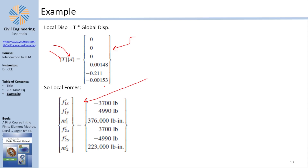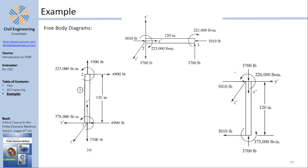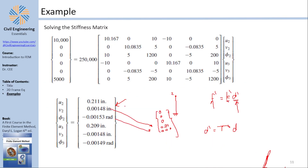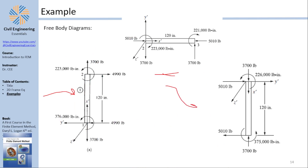The same process is repeated for element 2, which connects nodes 2 and 3, taking those global displacements, multiplying by the transformation matrix for local displacements, then by the local stiffness matrix for local forces. Similarly for element 3. This concludes the introductory example for chapter 5. The next example will include a distributed load and the drawing of bending moment and shear force diagrams.